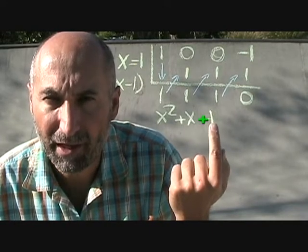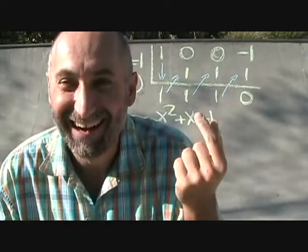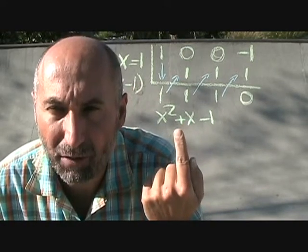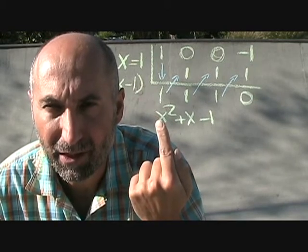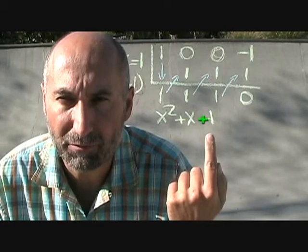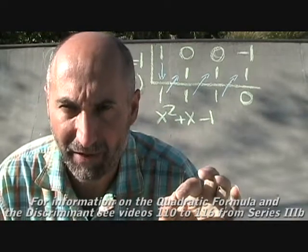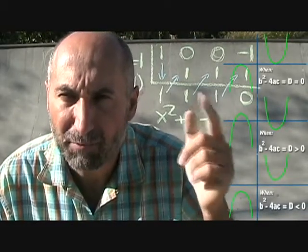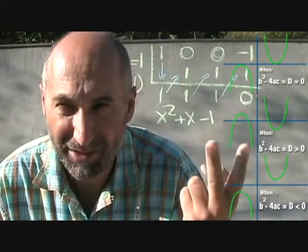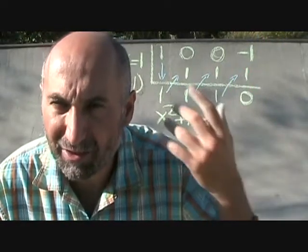Now we need to try to factor x squared plus x plus 1 further. We can't use simple trinomial factoring because we can't find two numbers that multiply to give negative 1 and add to give 1. We can't use complex trinomial factoring either since the leading coefficient is 1. So we'll use the quadratic formula — but first, let's check the discriminant, b squared minus 4ac, to see if it even has real roots. If it's less than 0, there are no real roots.